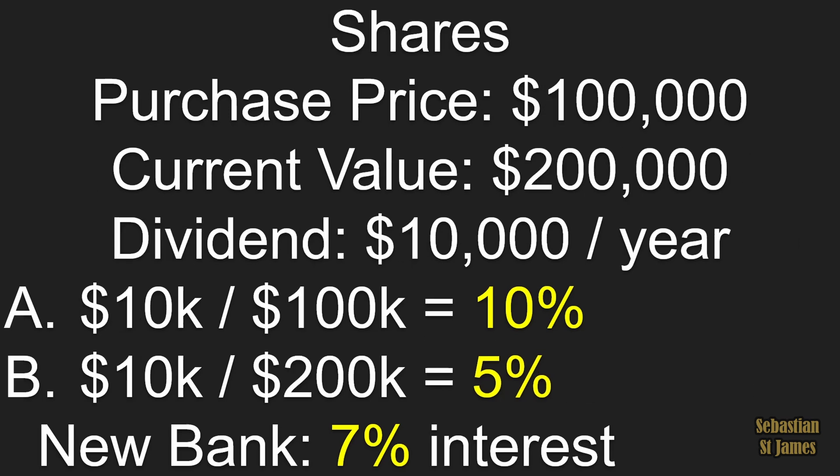Let's look at the shares. Purchase price $100k, current value $200k, dividend $10,000 per year. Is it 10% or 5%? The new bank is offering 7%. Should I sell my shares and move to the new bank? Yes — because we always calculate over today's value. It's actually 5% on the shares. Why not sell and get a guaranteed 7%? Return on investment is always calculated on today's value, not the original. Money is always fungible — you can sell and reinvest.